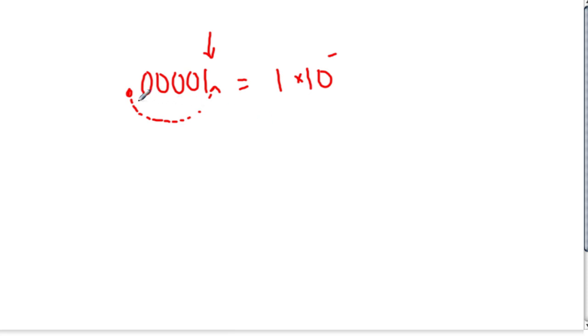So, we do 10 to the negative power instead of the positive power. And how far did we go? Well, just as far as we jumped. So, it's 1, 2, 3, 4, and don't forget to count past the number. And that's negative 5.